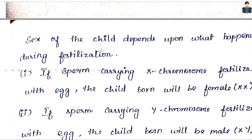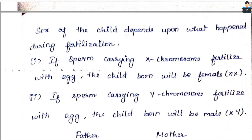The sex of the child depends upon what happens during fertilization — whether the child is male or female depends upon the fertilization process. Now, looking at the sperm: there are X chromosomes and Y chromosomes in sperm. If the sperm carrying the X chromosome fertilizes the egg, the child will be female.